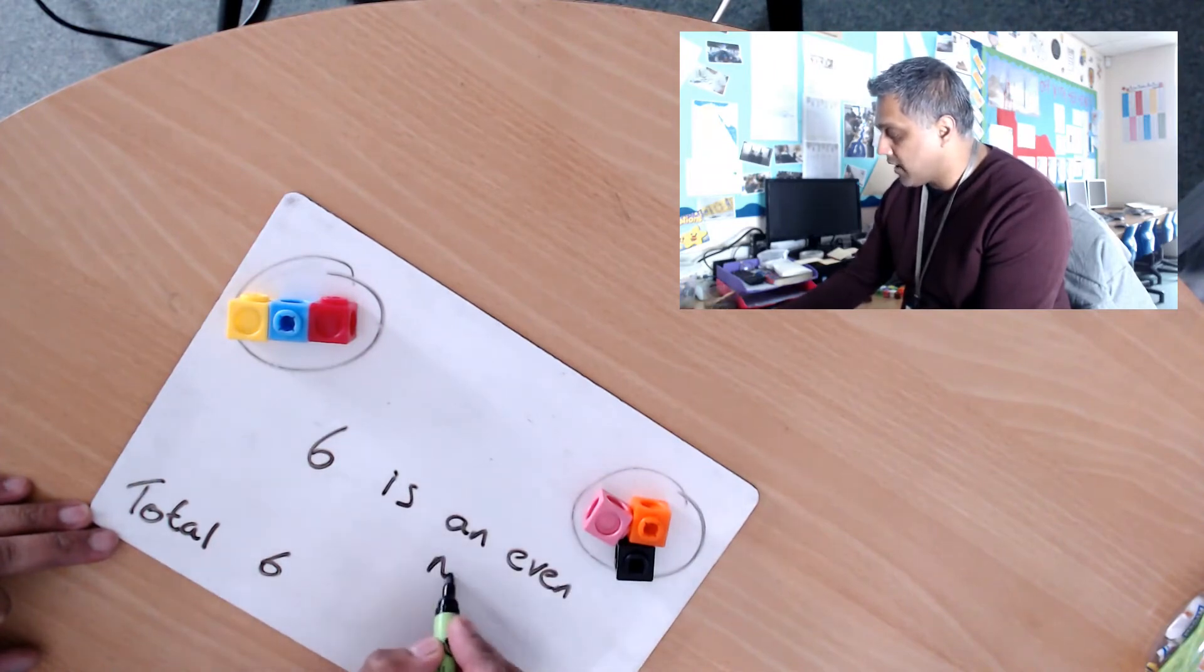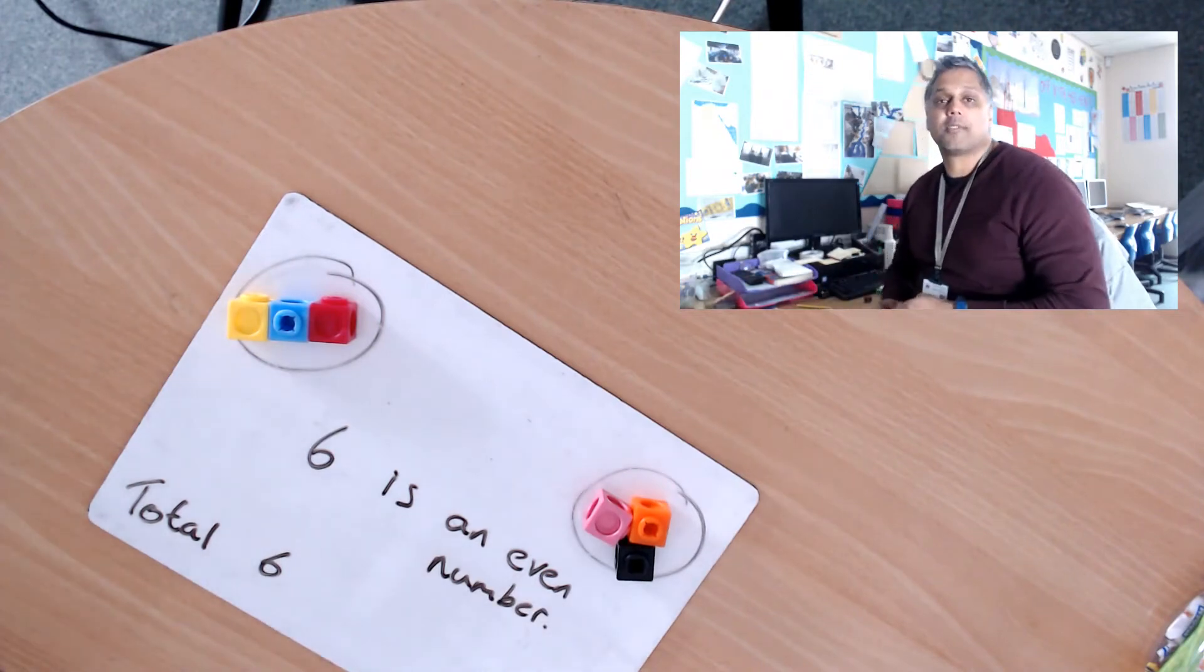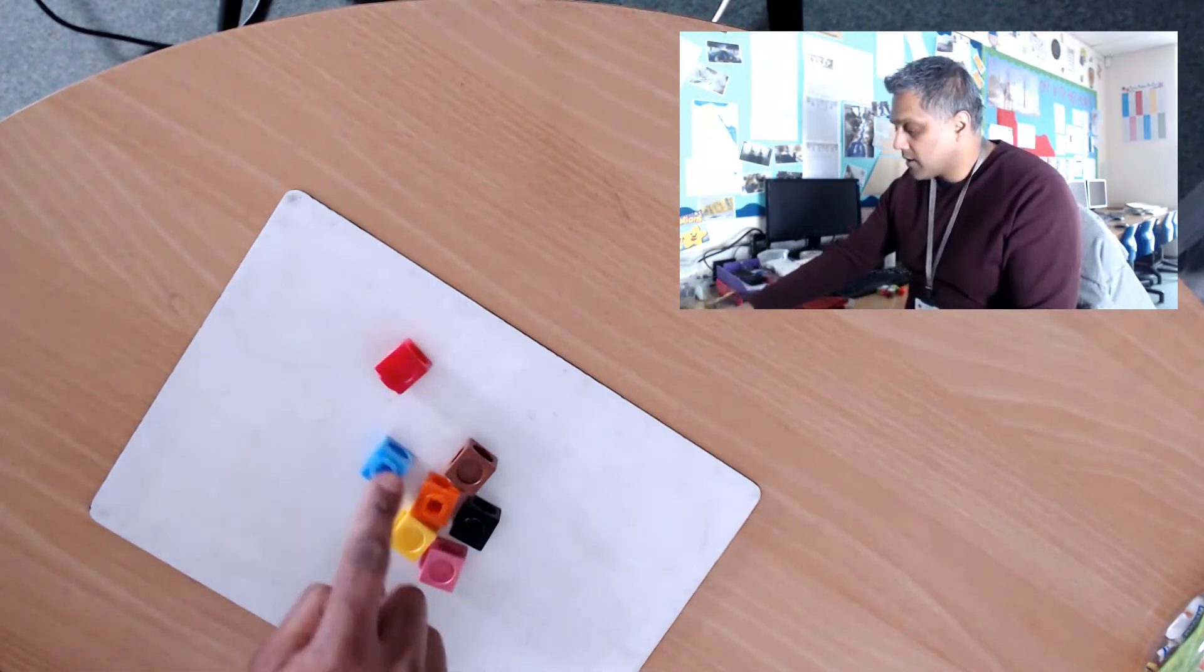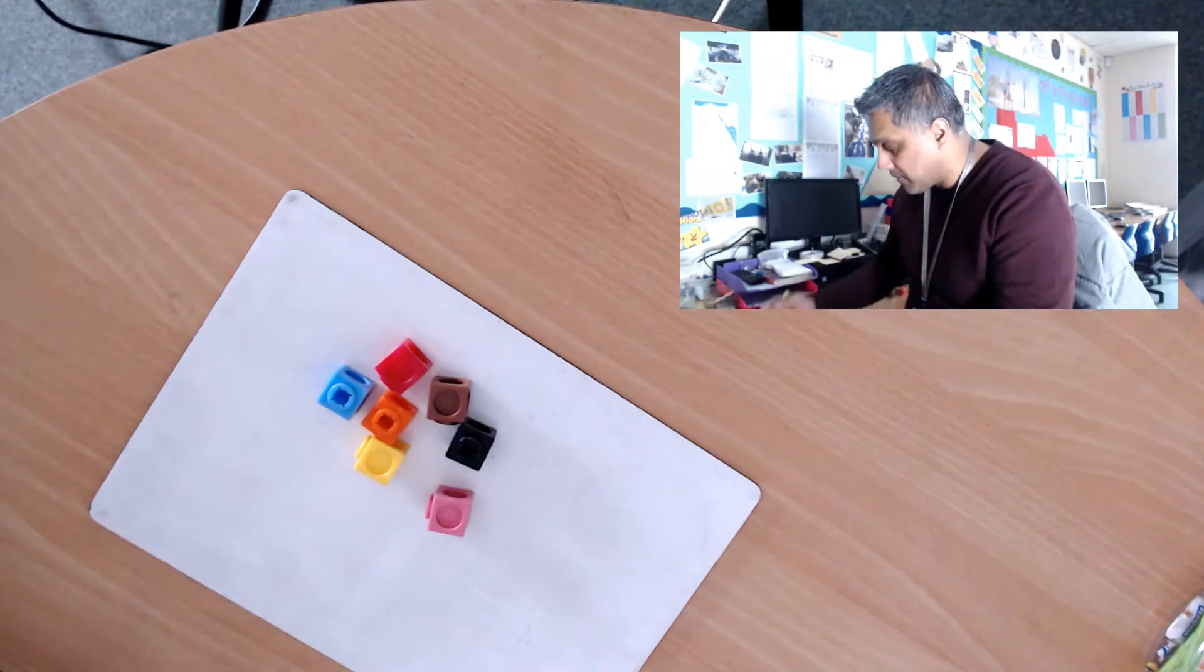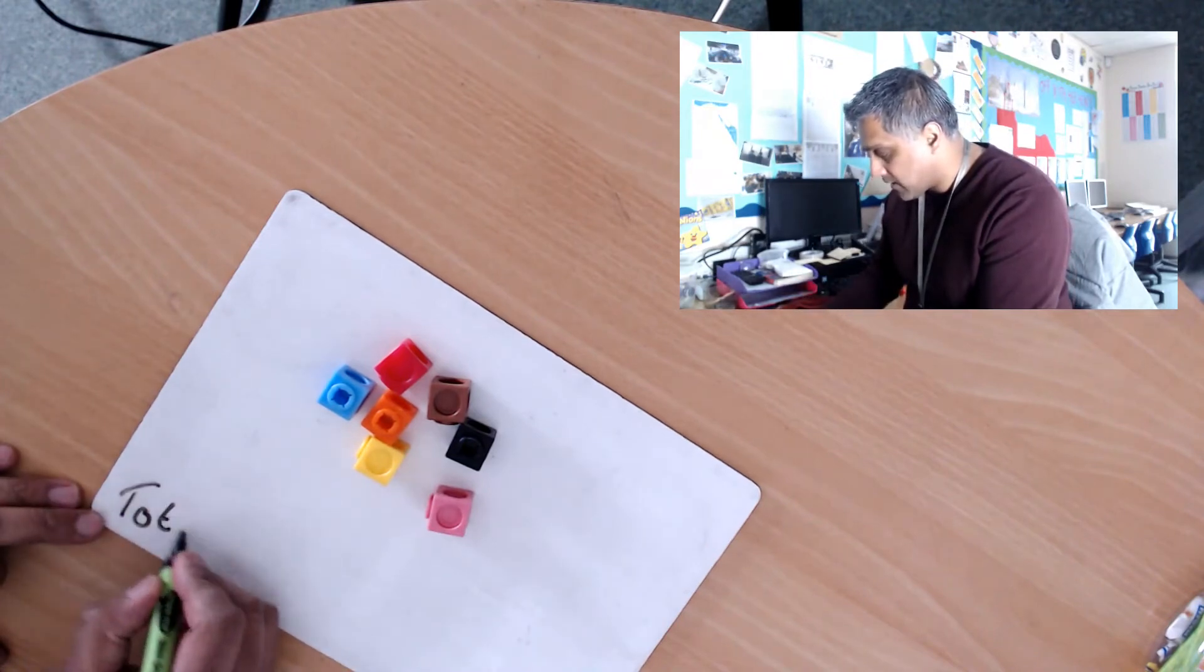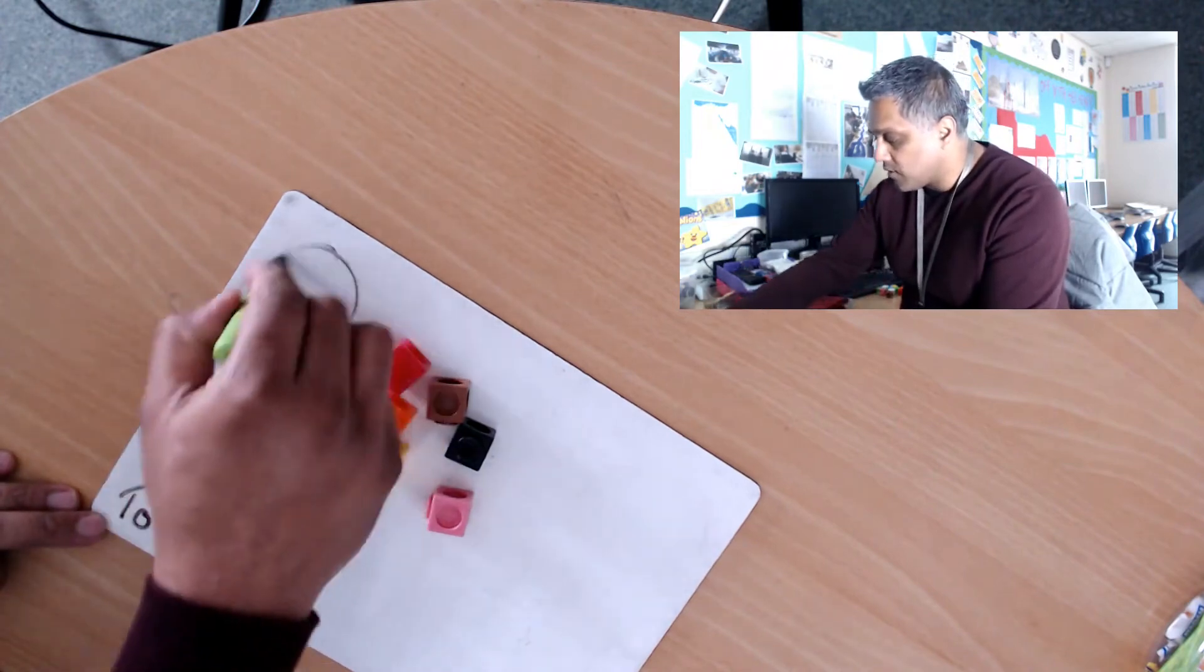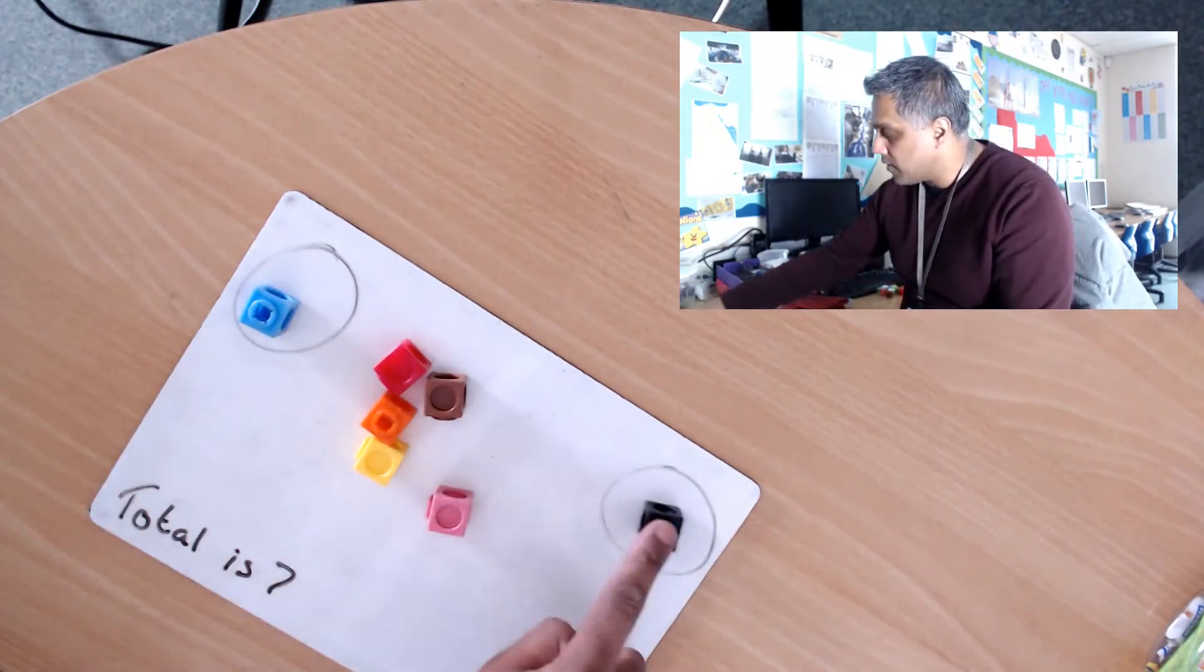So finally, we'll do one more number here. I've got some objects, so let's count: one, two, three, four, five, six, seven. So my total amount there is seven. There's my two groups, so one for me, one for you, one for me, one for you, one for me, one for you.